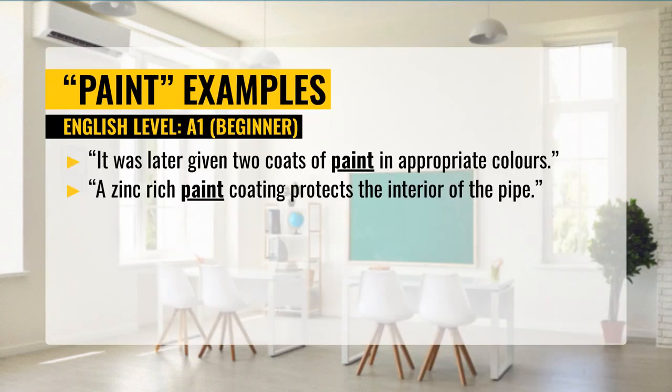How to use paint in a sentence. The first example: it was later given two coats of paint in appropriate colors. The second example: a zinc-rich paint coating protects the interior of the pipe.